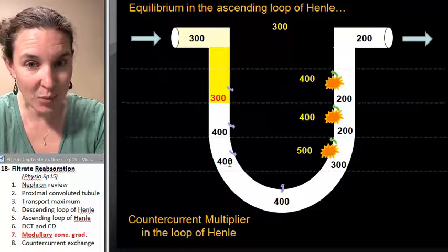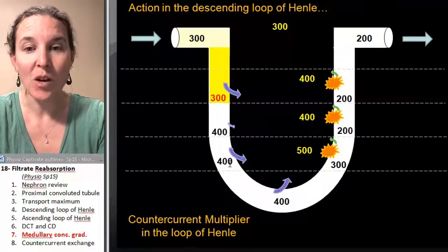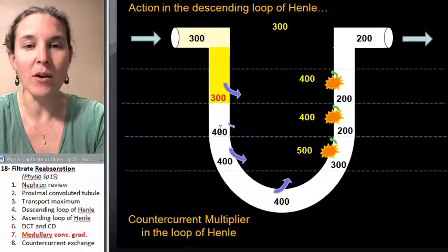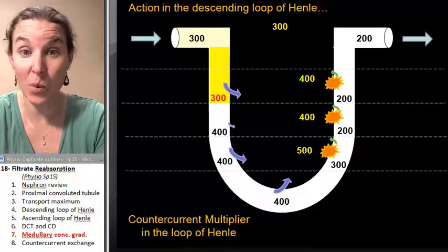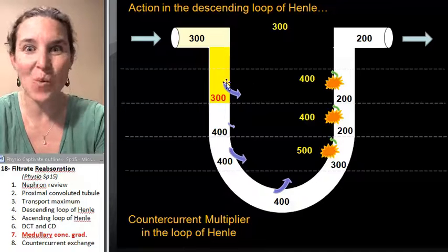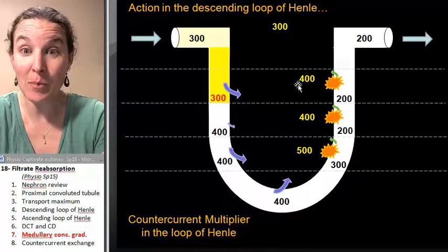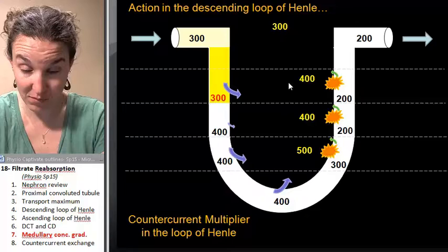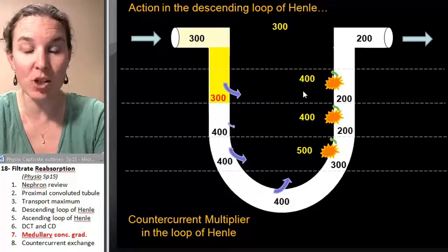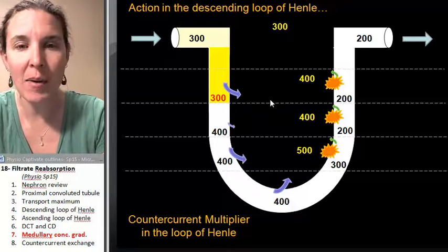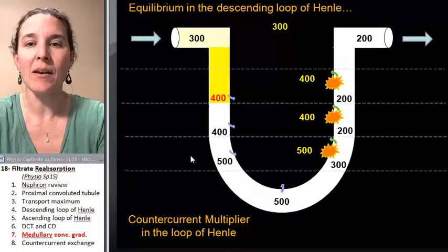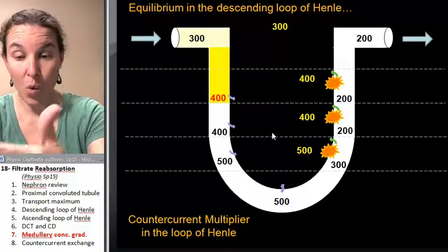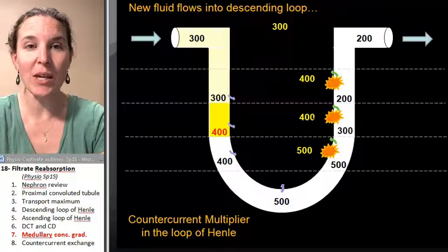In response, what's going to happen here? We're going to have water that's going to come out. We don't have water coming out here because it's isosmotic. Does that work? But here, we have, it's hyperosmotic in the interstitial fluid, so water is going to come out of the filtrate. That's going to make the whole thing more concentrated, and we can just keep it going.